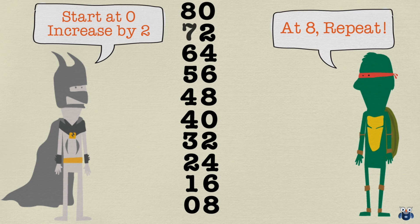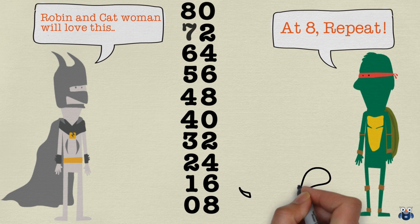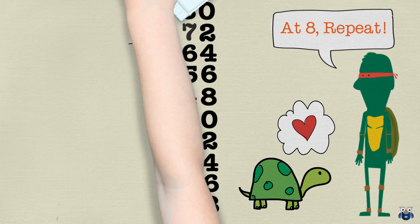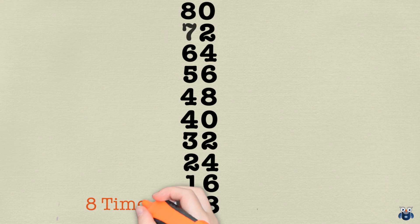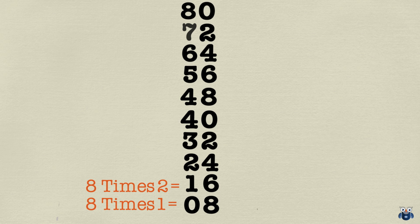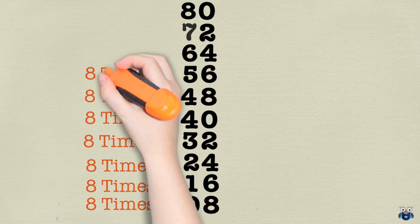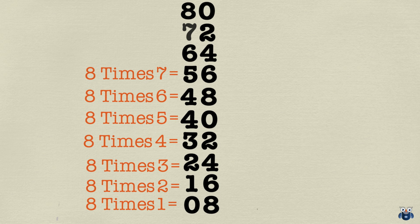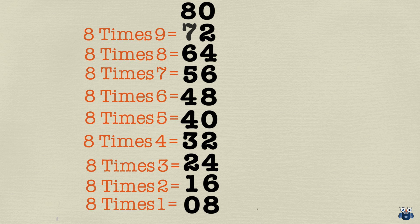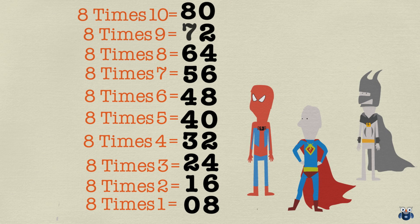Ladies and gentlemen, what you have just done is written the 8 times table without even knowing it. Let me show you: 8 times 1 is 8, 8 times 2 is 16, 8 times 3 is 24, 8 times 4 is 32, 8 times 5 is 40, 8 times 6 is 48, 8 times 7 is 56, 8 times 8 is 64, 8 times 9 is 72, and 8 times 10 is 80.